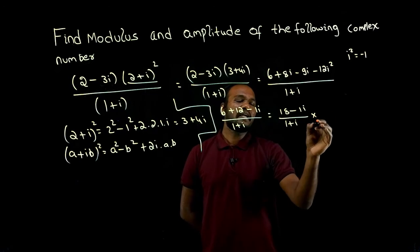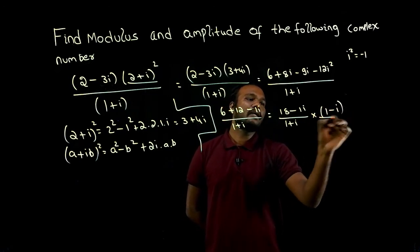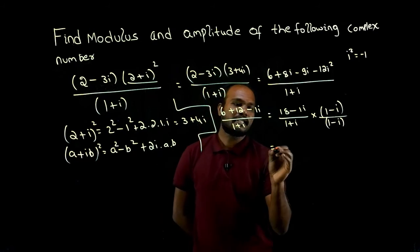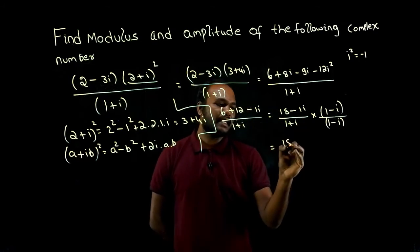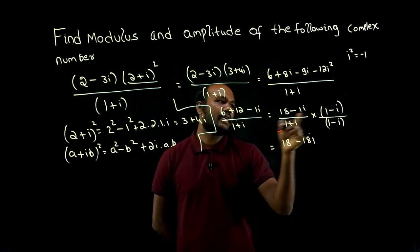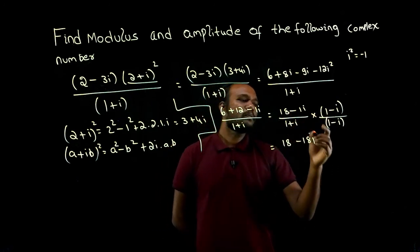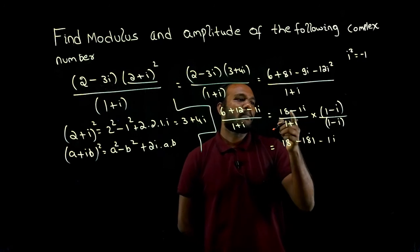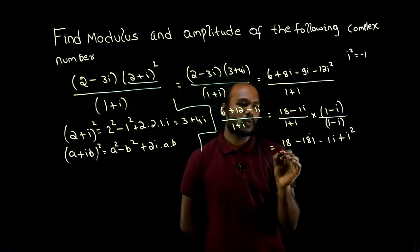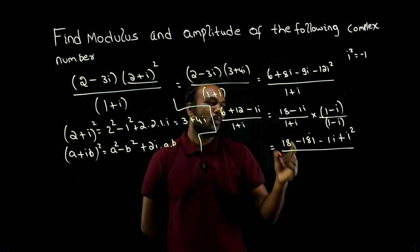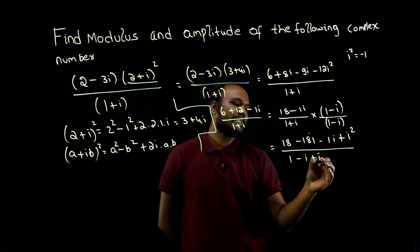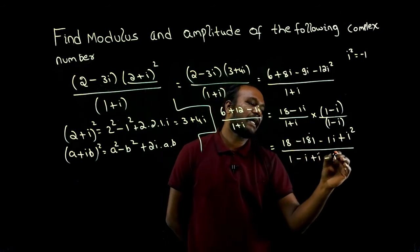So I have to multiply this with (1 minus i) divided by (1 minus i) to rationalize the denominator. Expanding: 18 into 1 is 18, minus 18 into i is 18i, minus 1i into 1 is minus i, and minus into minus gives plus i times i equals i². In the denominator: 1 into 1 is 1, minus i plus i, minus i².